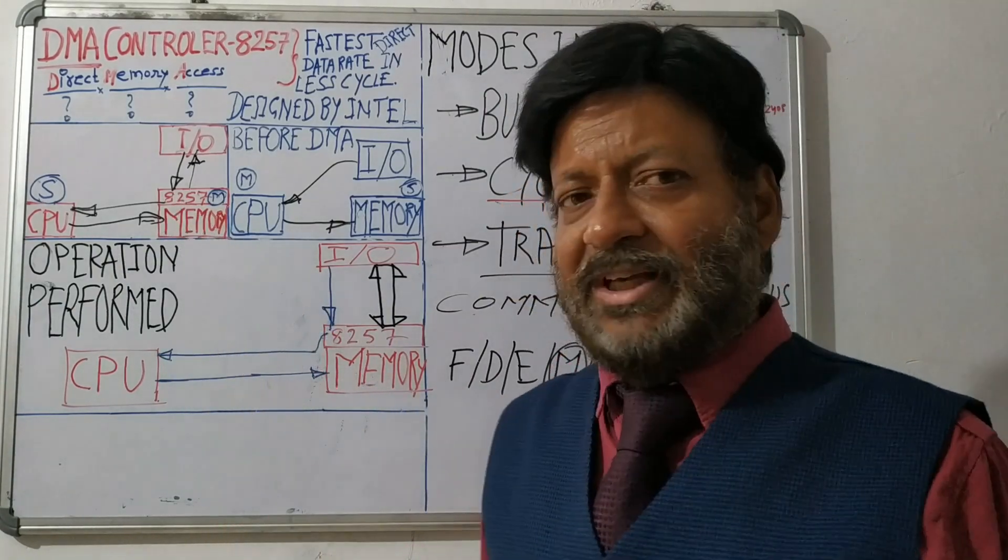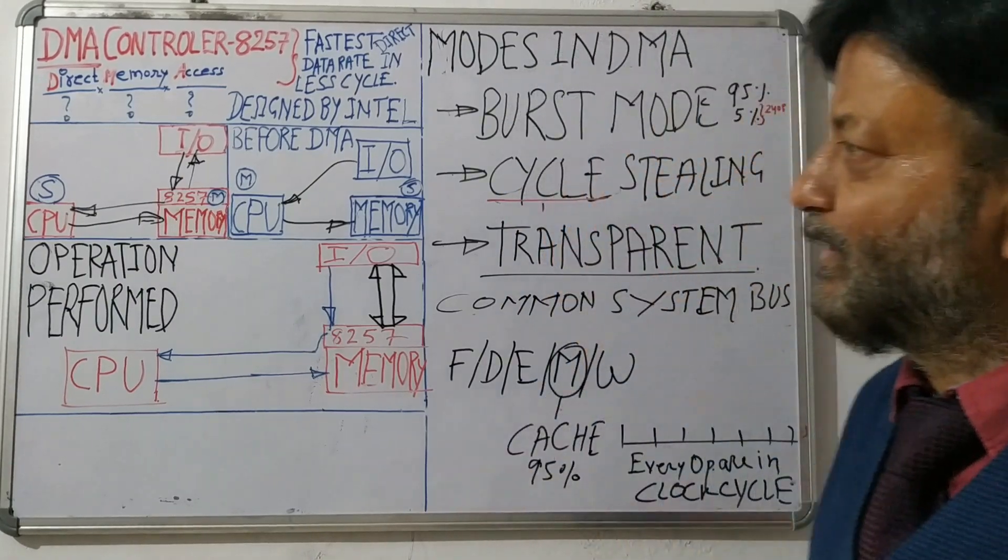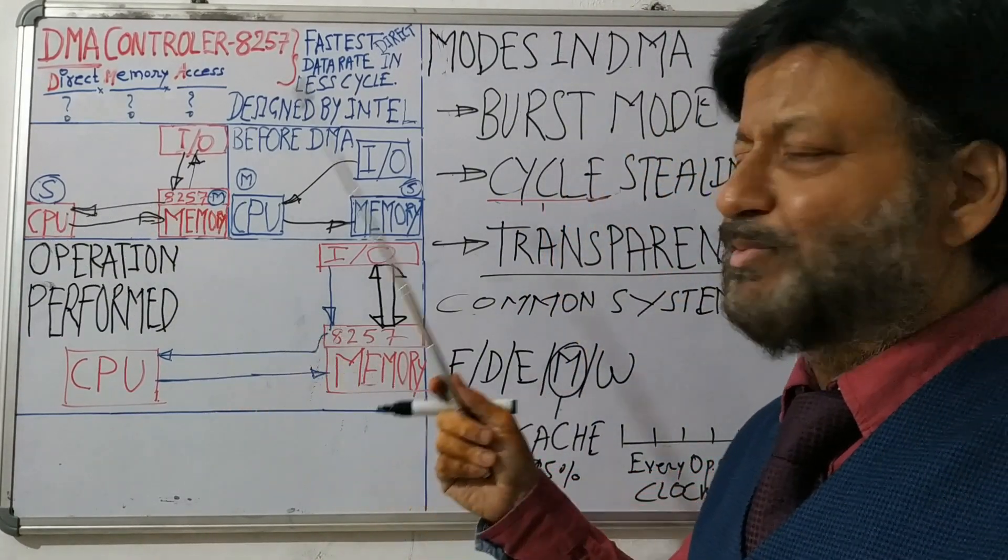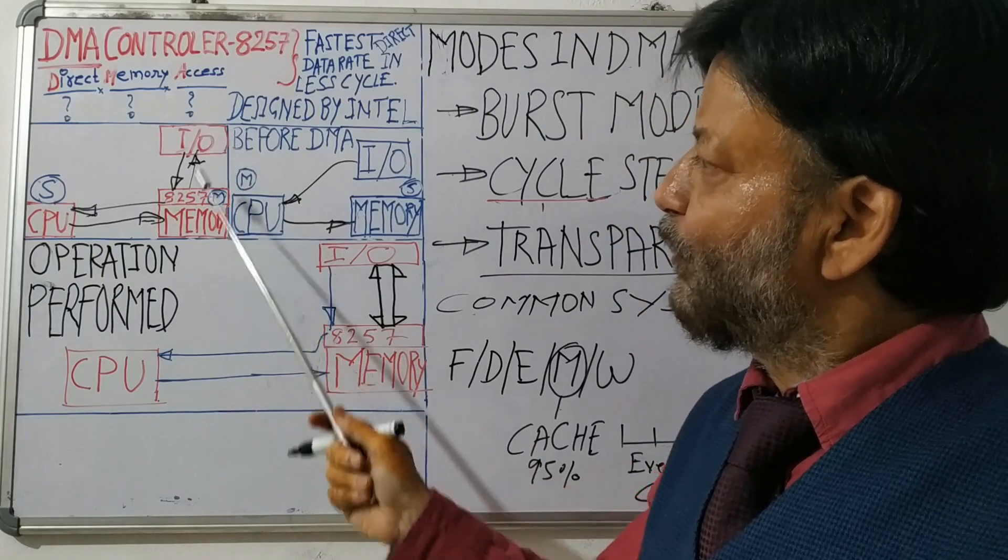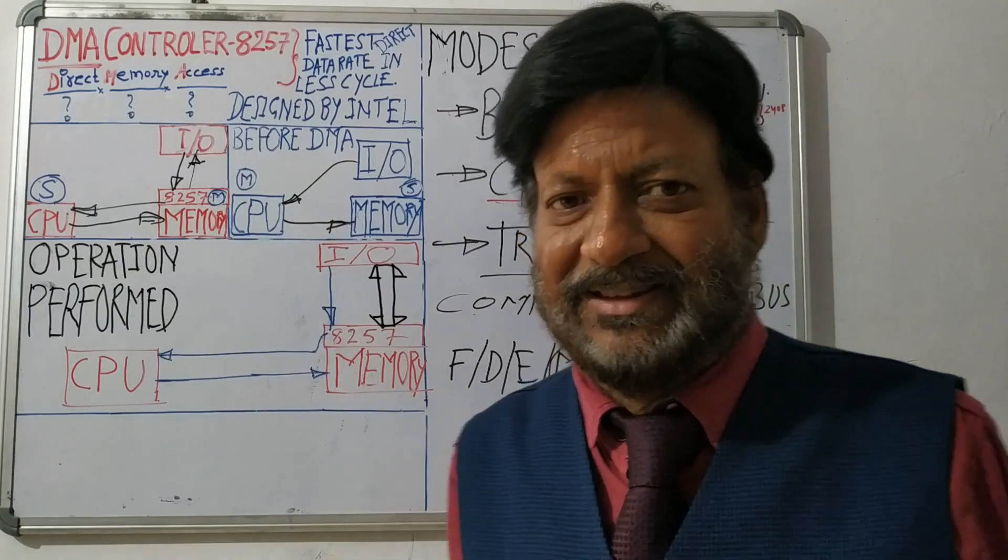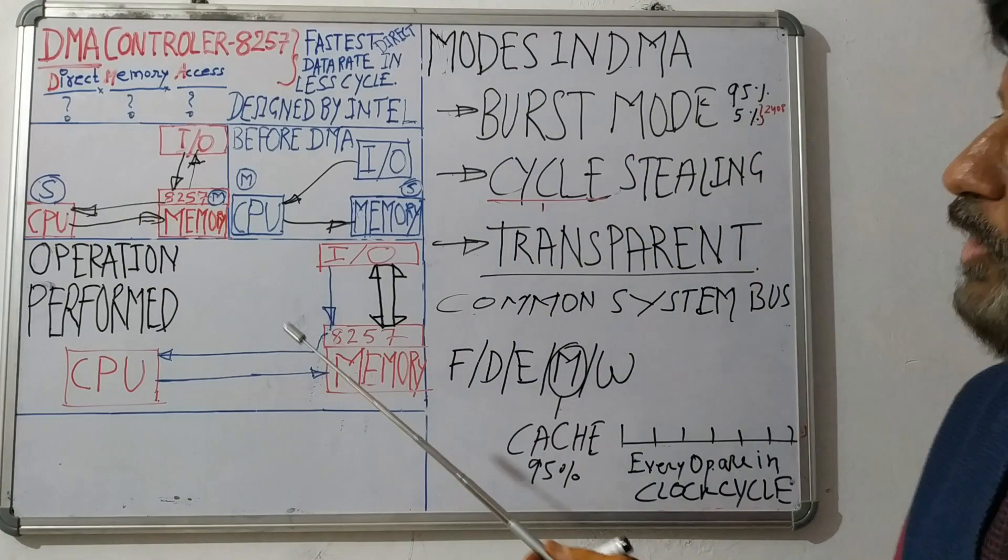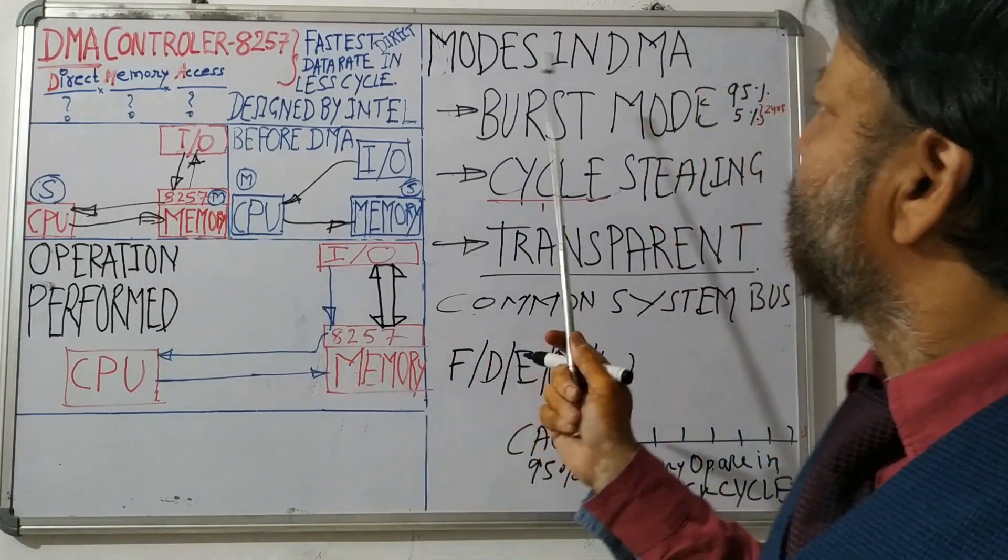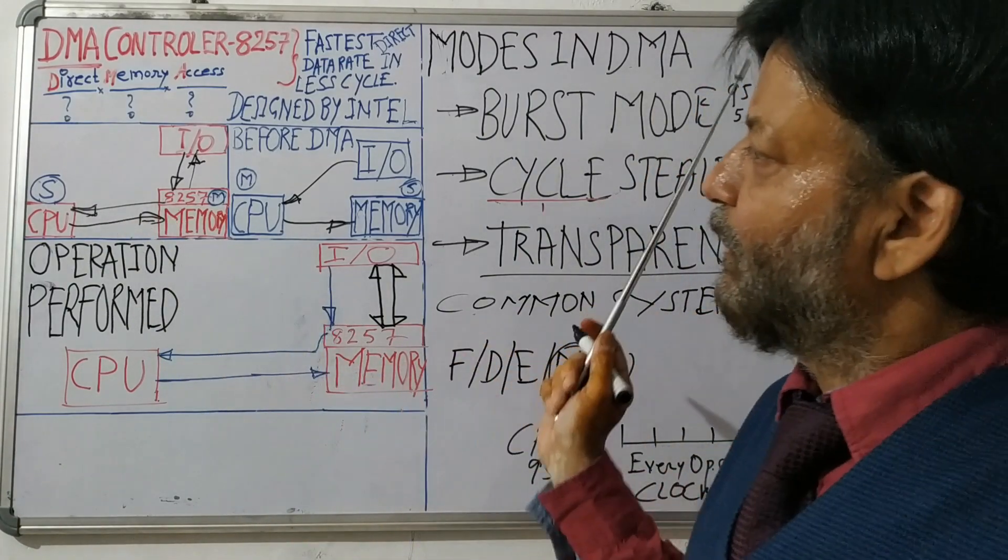System bus, because we have a single system bus. Either it can be used by CPU or it can be used by memory and IO or it can be used by CPU for other purposes. How it can be resolved? We will see in modes in DMAs.